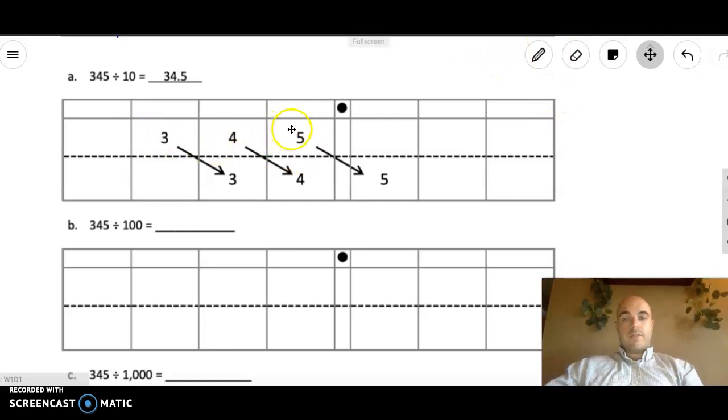So in this case, we have 345, and we're dividing it by 10. So we're taking all those individual place values and dividing them by 10. So instead of moving up or left by 1, 0, we're now moving down or right on the place value chart by 1, 0. So my 3, which was here in the hundreds place, is now here in the tens place. My 4 that was here in the tens place is now here in the ones place. And my 5 that was in the ones place here now goes to the tenths place, which is the number right here behind the decimal.